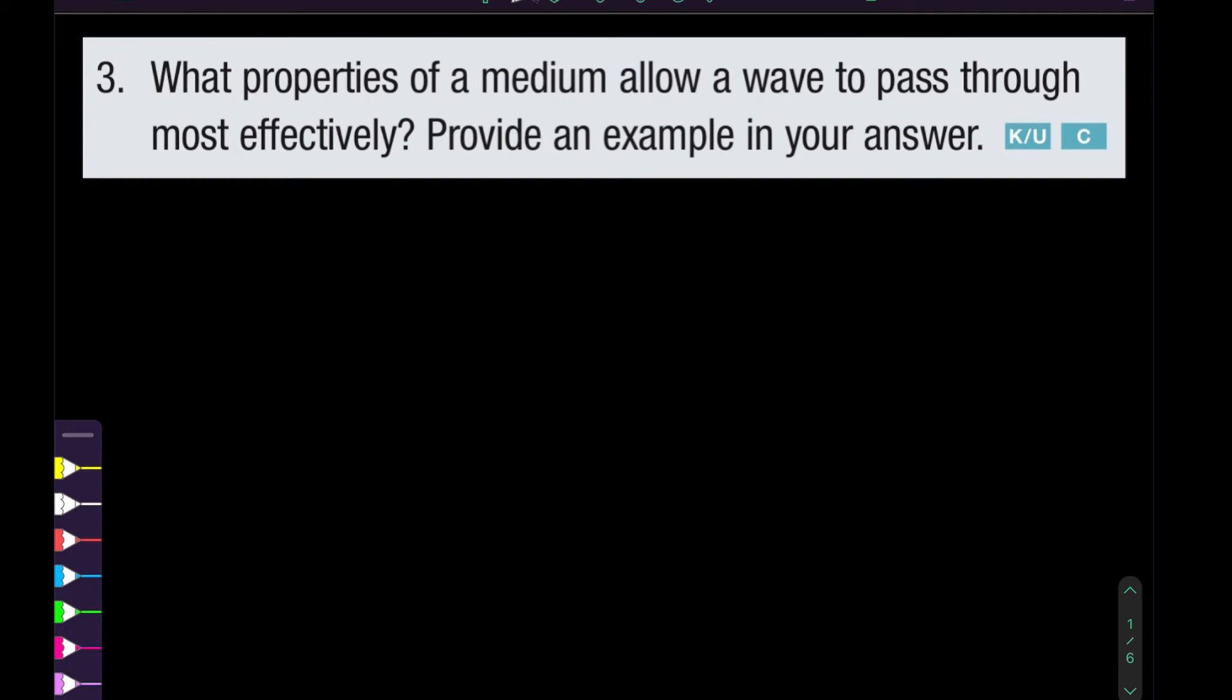Question number three: What properties of a medium allow a wave to pass through most effectively? Provide an example. A wave is traveling energy transferred from one particle in the medium to another. We need to increase the number of collisions and their efficiency to determine how quickly the wave can pass through. One way to think about this is to compare an open space and a closed container.